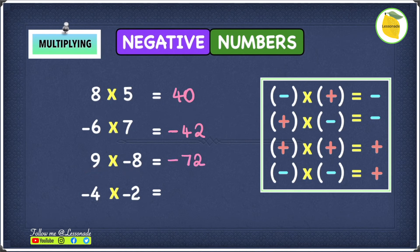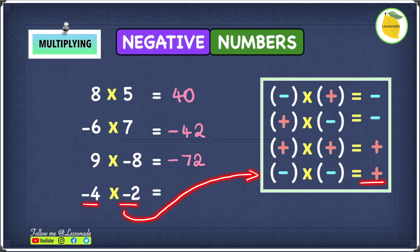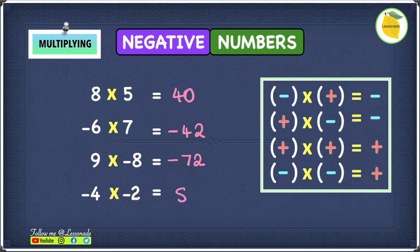The final one we have is minus 4 times minus 2. We can see that both of them are negative. When you have two of the same signs, then your answer will be positive. So minus 4 times minus 2 gives us an answer of positive 8.